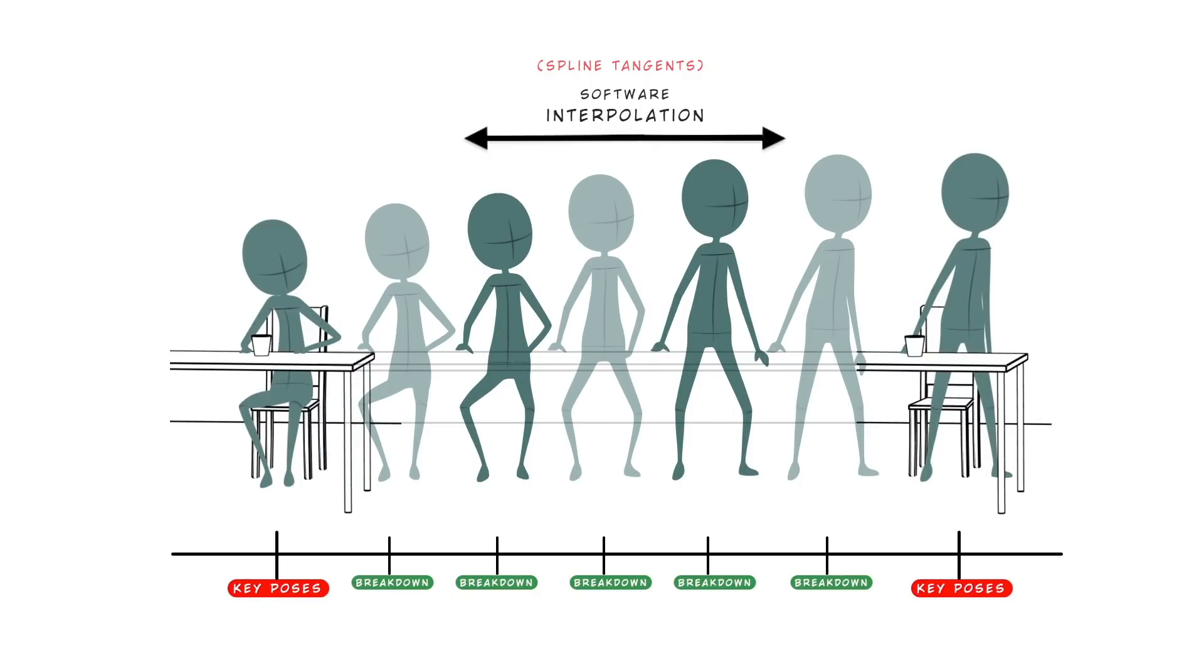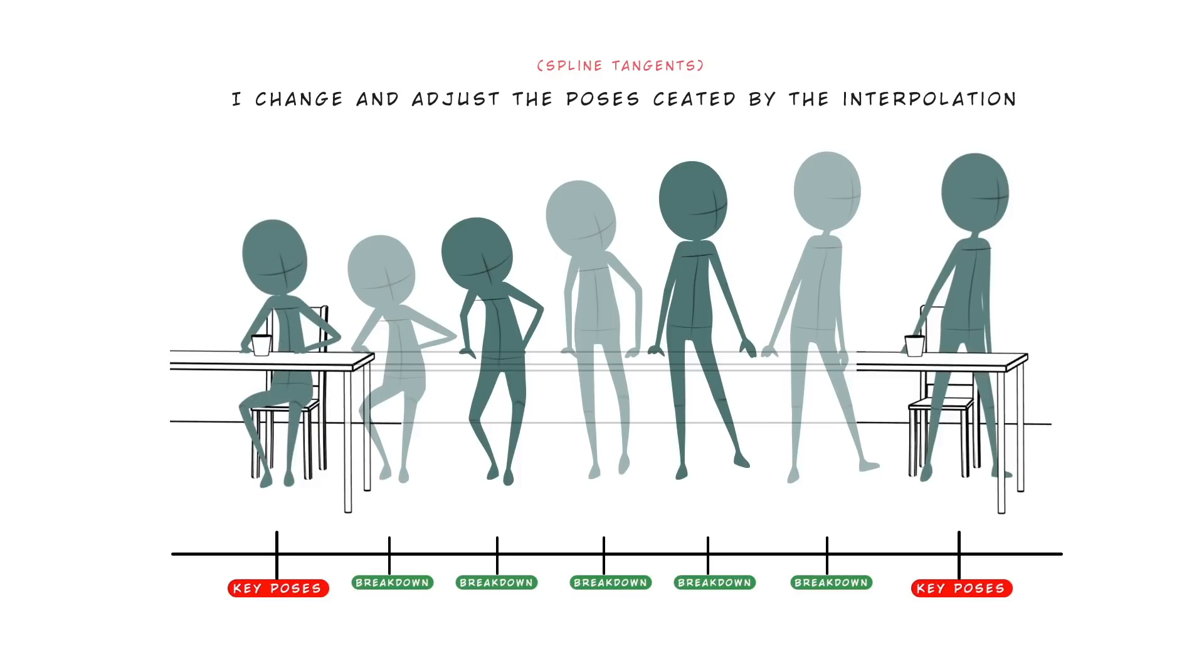Now I have my key poses and some breakdowns created by the interpolation. And what I got to do is to change and adjust these poses as I want. Then I check if the movement is what I had in mind and at this point I switch the tangents in stepped.